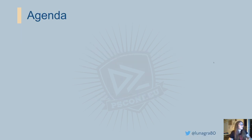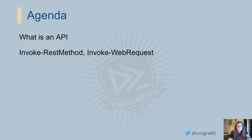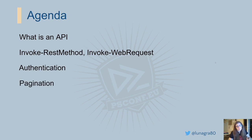Let's start with the agenda. I will talk about what an API is, some of the standards and implementations you can find, what are the entities involved, what cmdlets PowerShell gives us to interact with APIs, the difference between Invoke-RestMethod and Invoke-WebRequest, when to use one or the other, the different kinds of authentication, pagination, and examples from different applications.